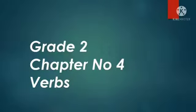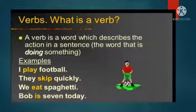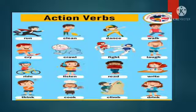Verbs are also called action words. A verb is a word which describes the action in a sentence — it tells us that someone is doing something. For example, 'I play football.' 'They skip quickly.' These are telling us that the person is doing some action.